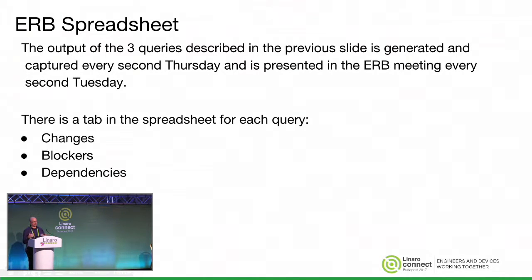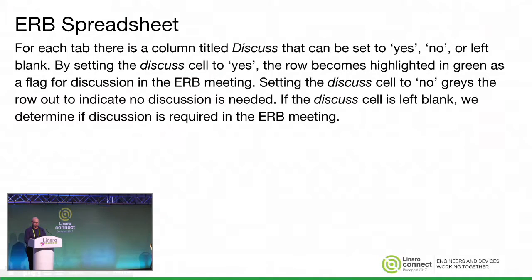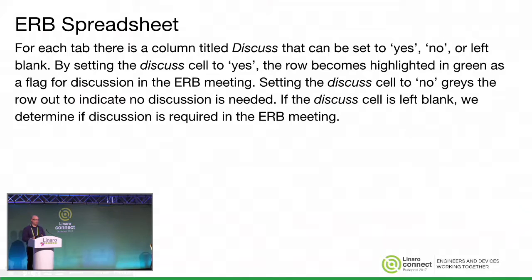The ERB spreadsheet is what's presented in the ERB meeting. The three queries each generate a tab. Sergey's script generates the changes tab, then the blockers and dependency tabs follow. Every second week we go through these. On the spreadsheet, there's a column called 'discuss' with a yes or no. If you click yes, the row highlights in green; if you click no, it grays out so you can see it but know it's not important. Clicking yes or no is at the discretion of the project managers and directors.